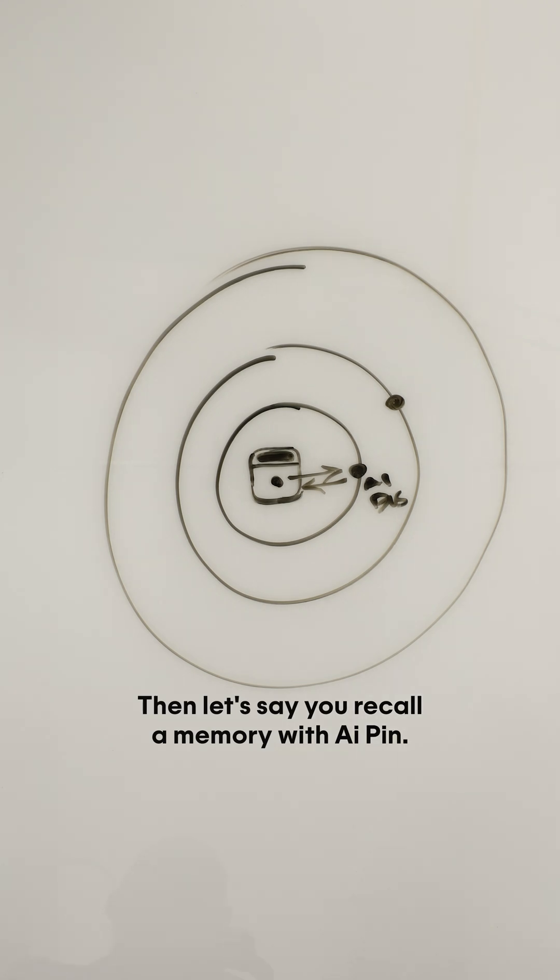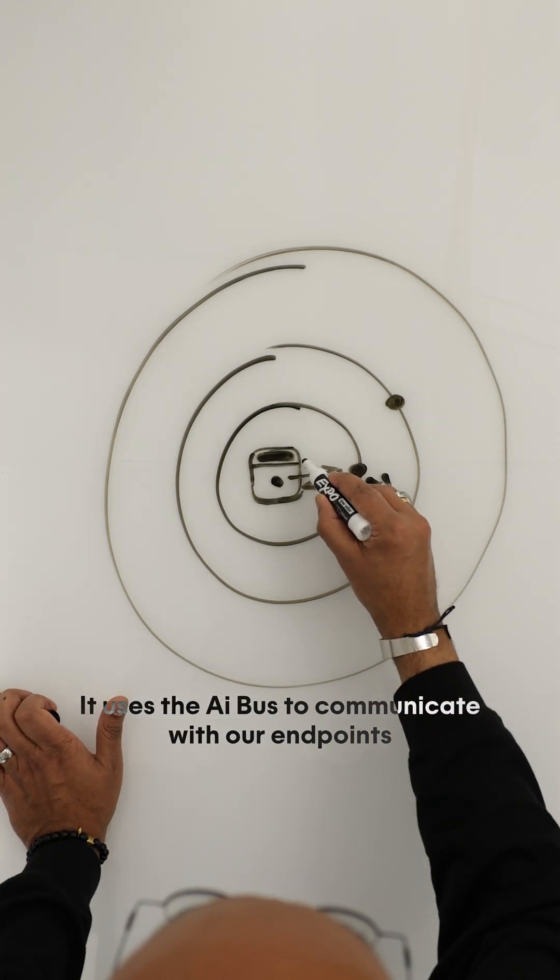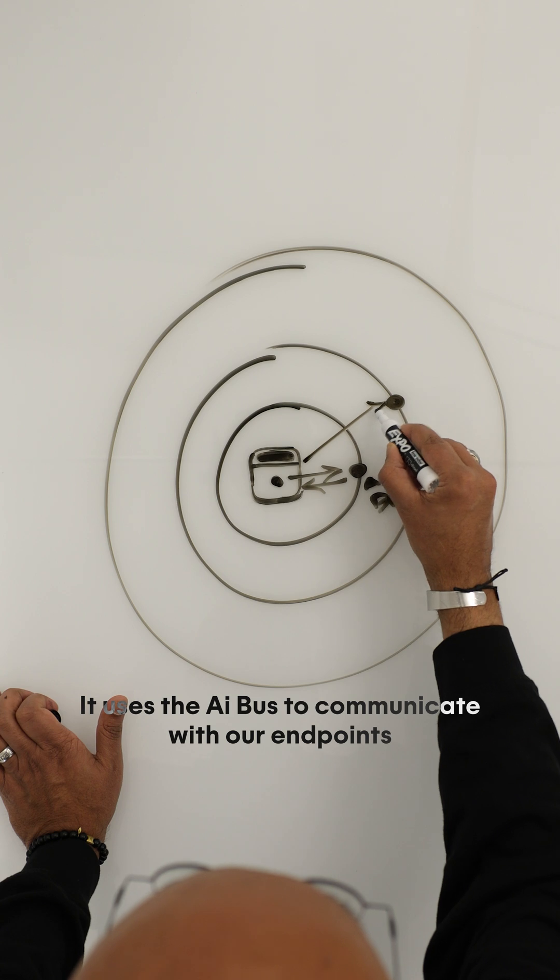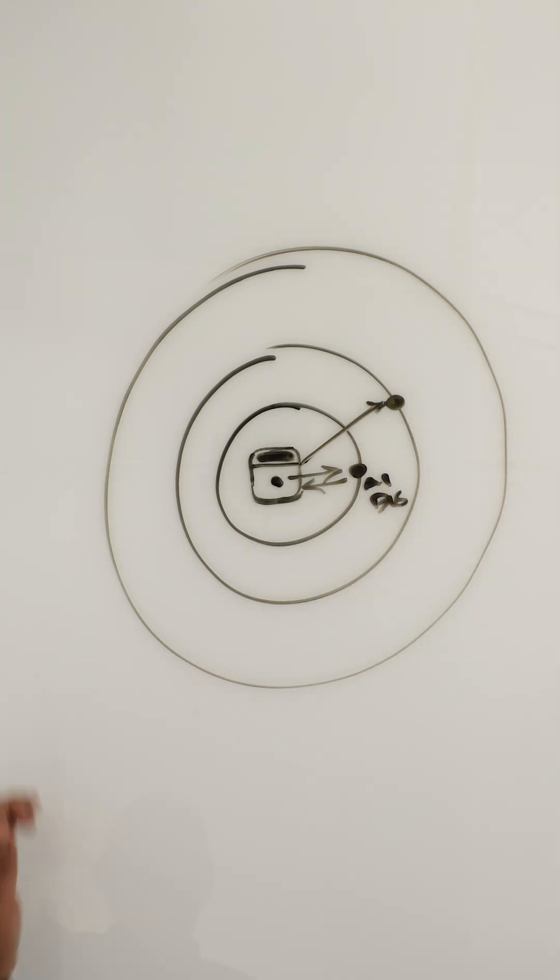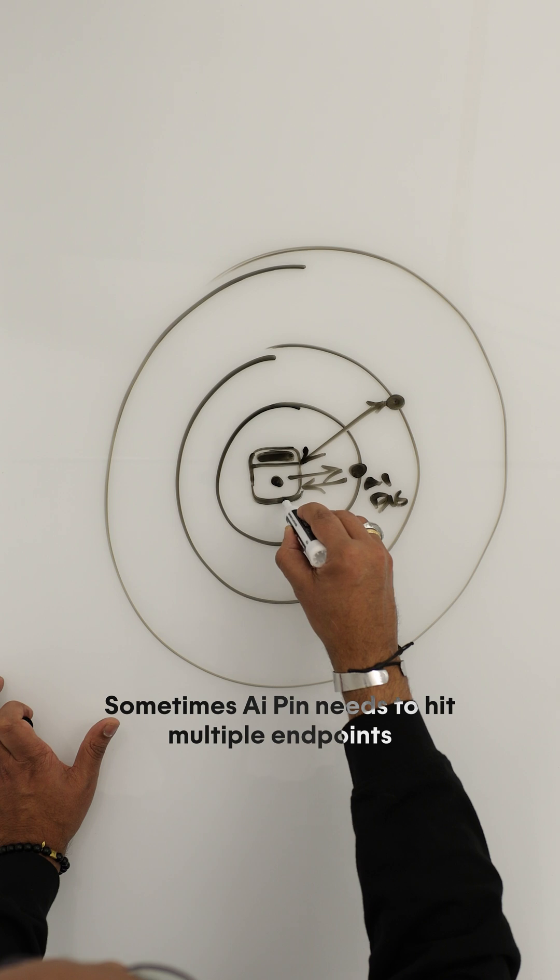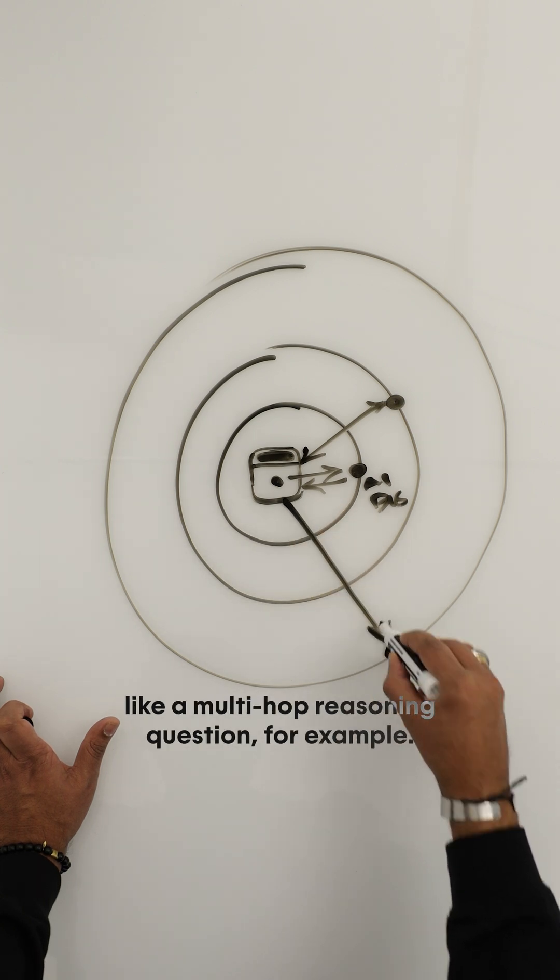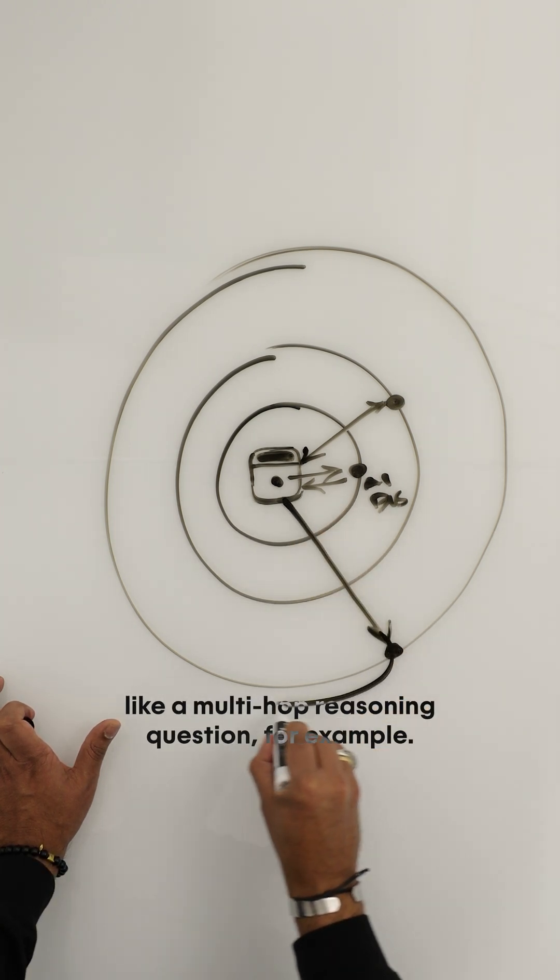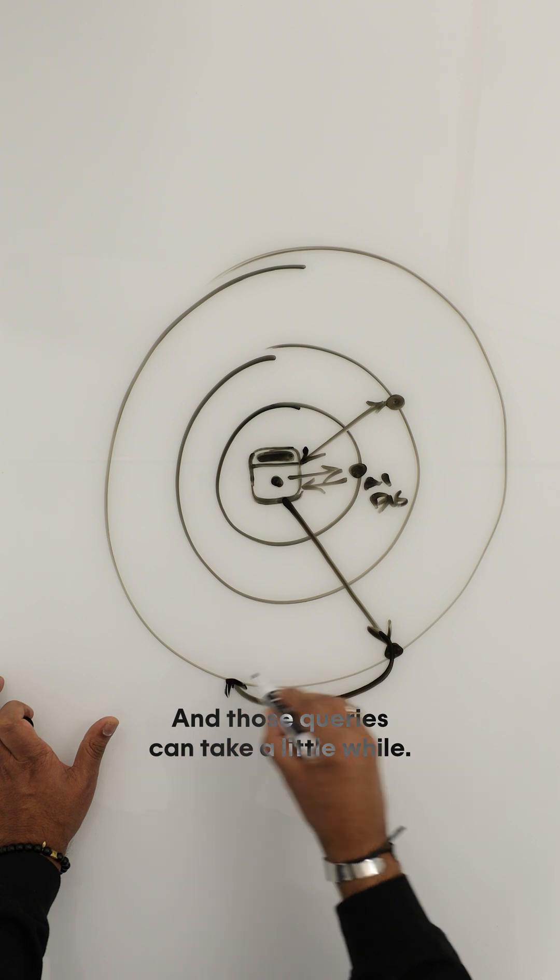Then let's say you recall a memory with AI Pin. It uses the AI Bus to communicate with our endpoints and comes back to the Pin. Sometimes AI Pin needs to hit multiple endpoints on the broader internet, like a multi-hub reasoning question, for example. And those queries can take a little while.